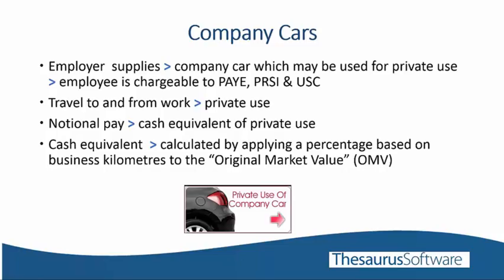The rules for the valuation of a Benefit in Kind vary depending on the nature of the benefit provided. If the employer pays a bill — for example a club subscription or gym membership — the value is the cost incurred by the employer. Where an employer provides goods to an employee, revenue will accept the higher of the cost of the goods to the employer or the market value realisable by the employee. There are specific rules for certain benefits such as company vehicles, which we will cover shortly.